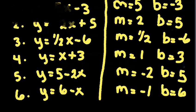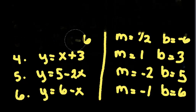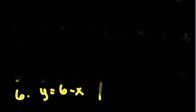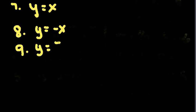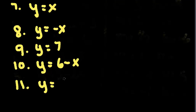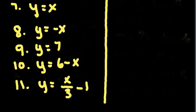And the last set. Number 7, y equals x. Number 8, y equals negative x. Number 9, y equals 7. Number 10, y equals 6 minus x. Number 11, y equals x over 3 minus 1. Pause the computer again and find the slope and y-intercept. The slope is the m, the y-intercept is the b for each of these problems.